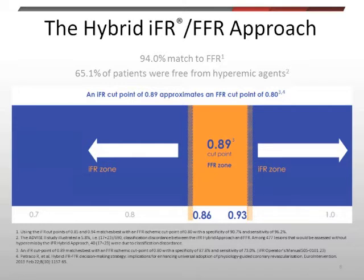The great advantage of this technique is that we achieve very close levels of matching between IFR and FFR, while sparing patients from unnecessary adenosine administration. Systematically, the hybrid approach spares patients from adenosine in around 65% of cases. So a minority of patients now require adenosine for a very high classification match with FFR.